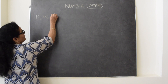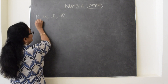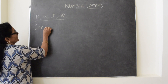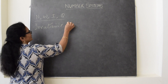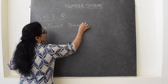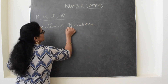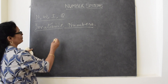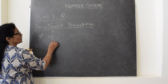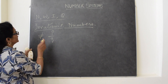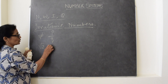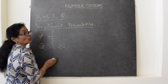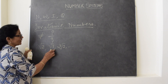So till now what we have seen: natural numbers, whole numbers, integers and rationals. There is a category called irrational numbers. Irrational numbers are the numbers which cannot be written in the form of P by Q.